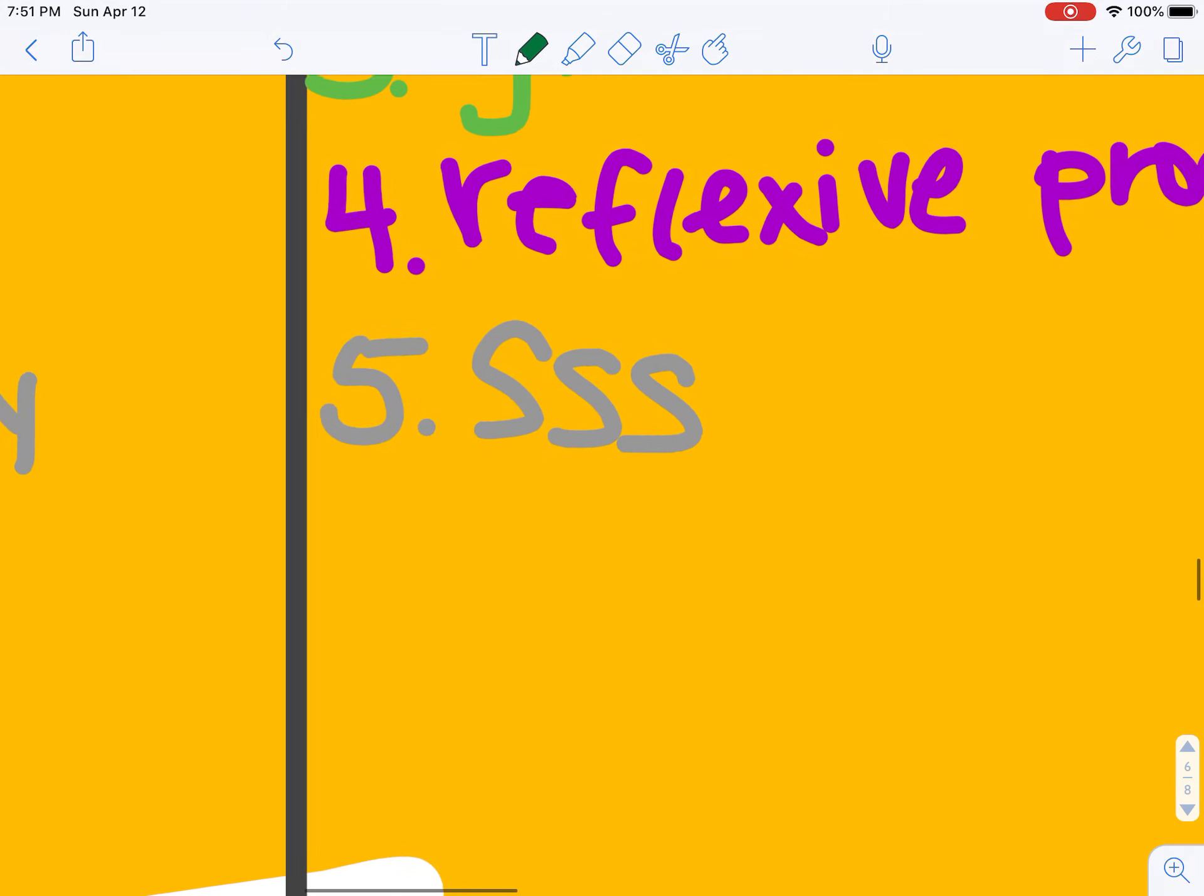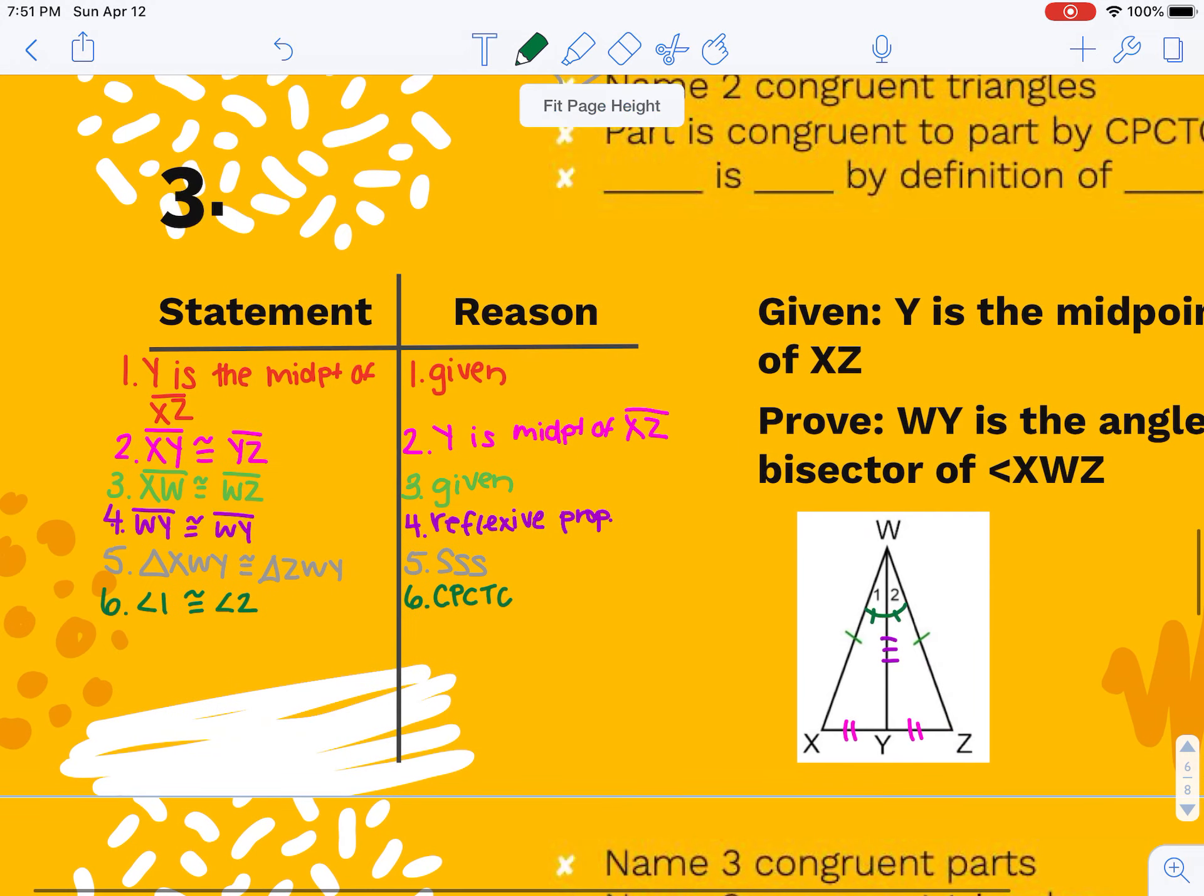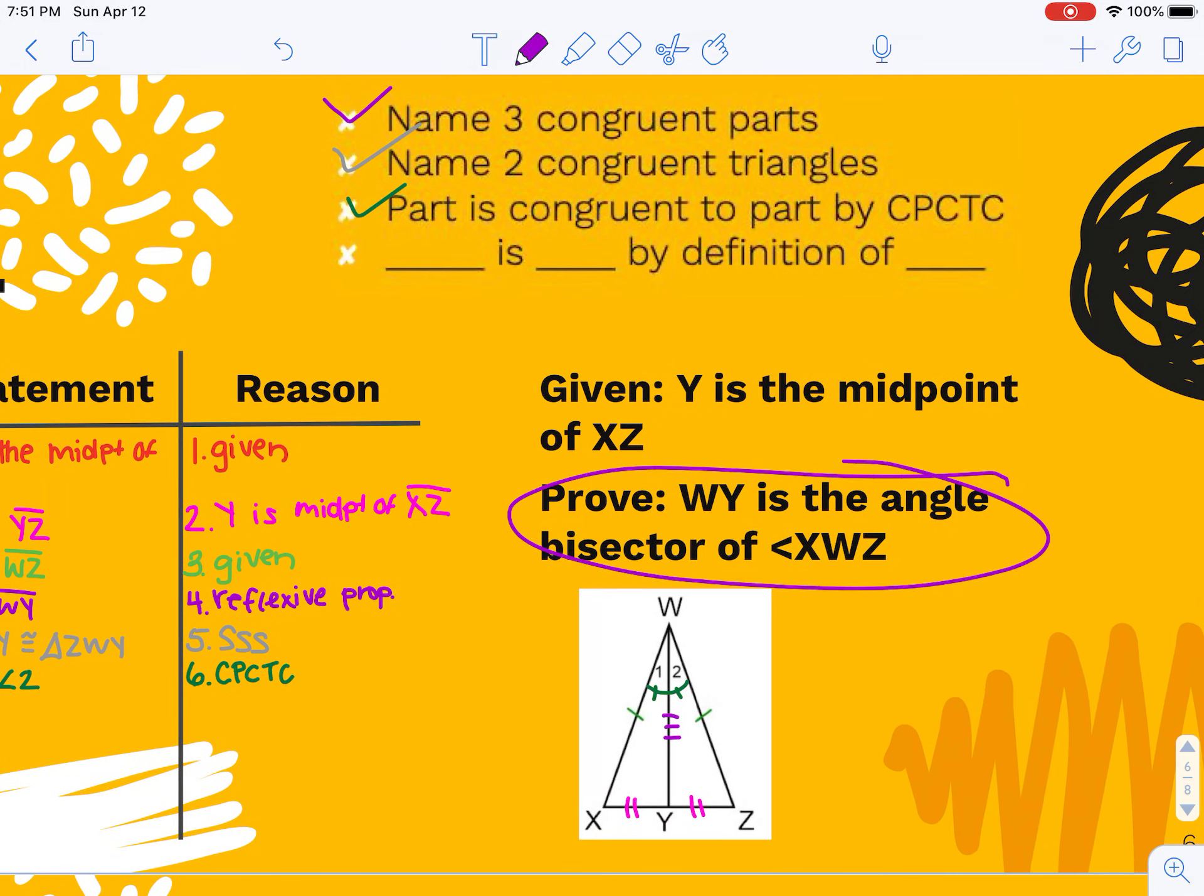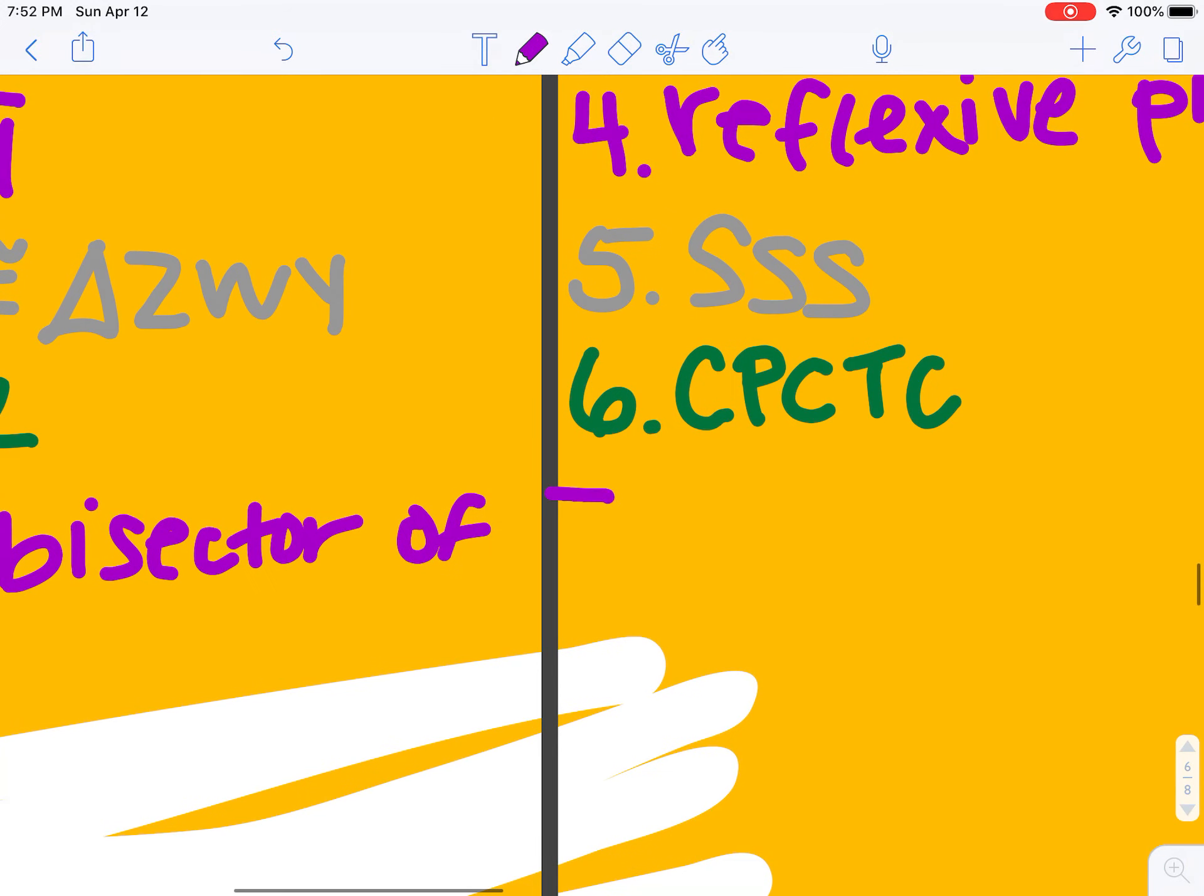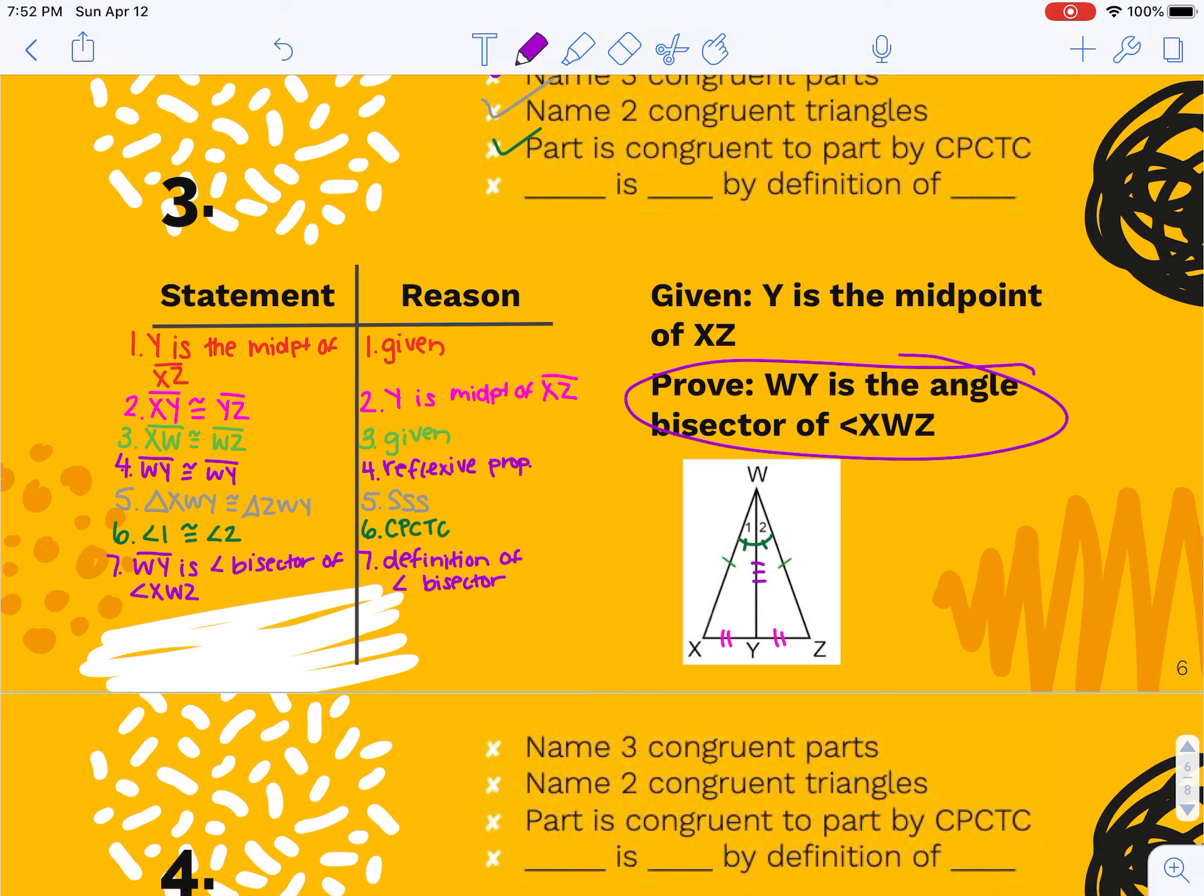If you'd rather write if triangles congruent, then parts congruent, you can do that. If you'd rather write out that corresponding parts of congruent triangles are congruent, that's okay too. My very last step then will be exactly what I was asked to prove. WY is the angle bisector of angle XWZ. And my reason will be definition of angle bisector. As soon as what I was asked to prove is my last line, I am good to go, I am done.